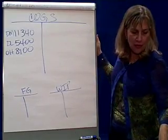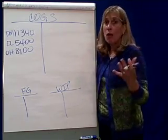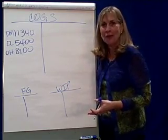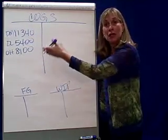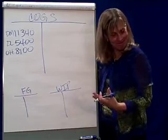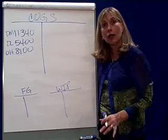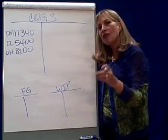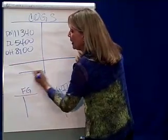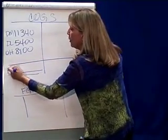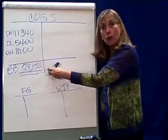On the 30th, we completed trowels costing $24,800 — we do nothing with that, because if we've completed them, are they ready to be sold? So nothing. And then on the 31st, we sold trowels costing $24,000. The sold trowels costing $24,000 gives you your ending balance. So we know that cost of goods sold is $24,000, because that's what we sold.